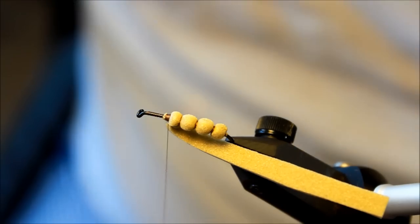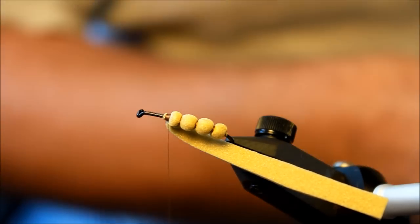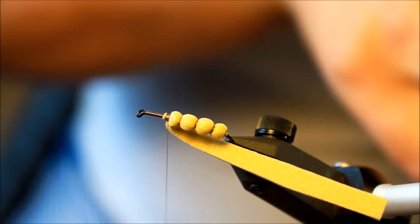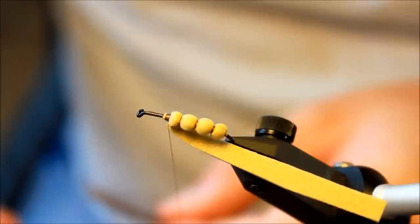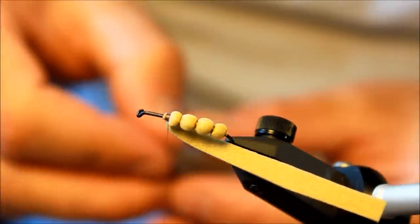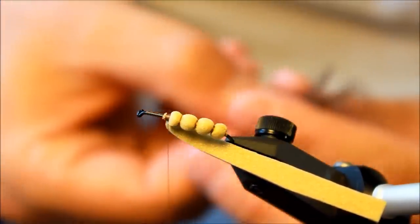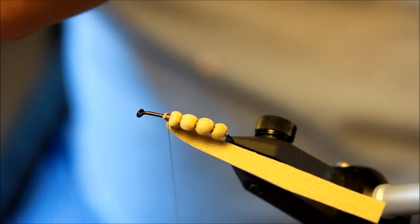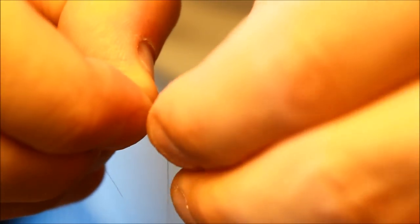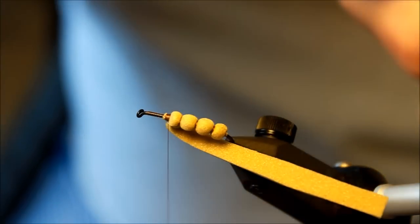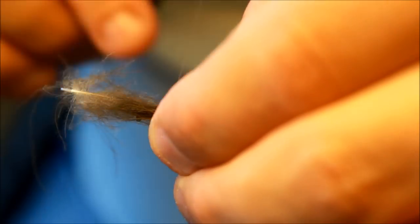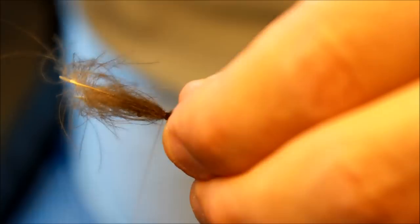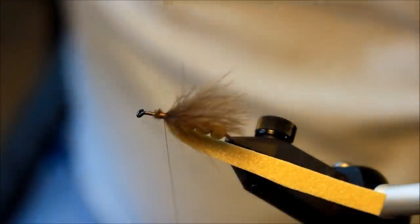Then I'm taking a couple of CDC feathers. I'm using some CDC feathers in the color natural brown, which is fairly nice for this pattern. Tying them down as the wing of the fly. So I want them to be roughly the same length as the body. Cutting this off.